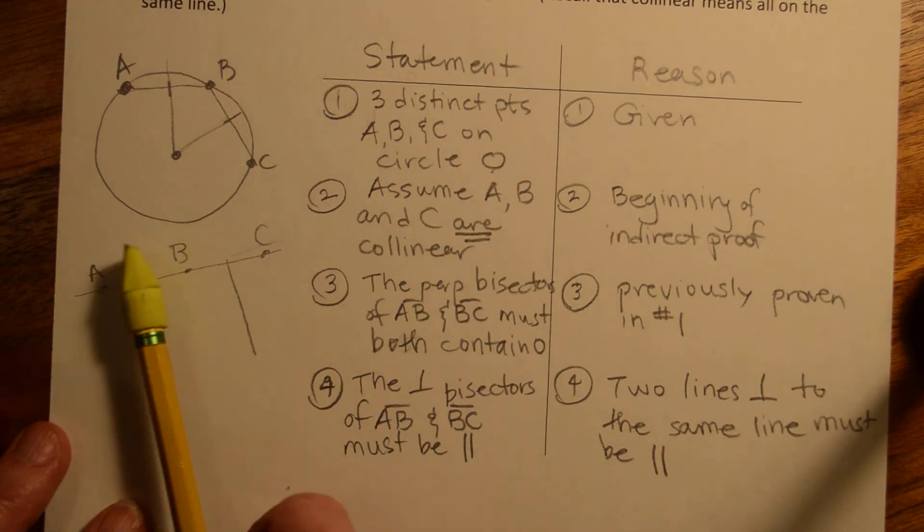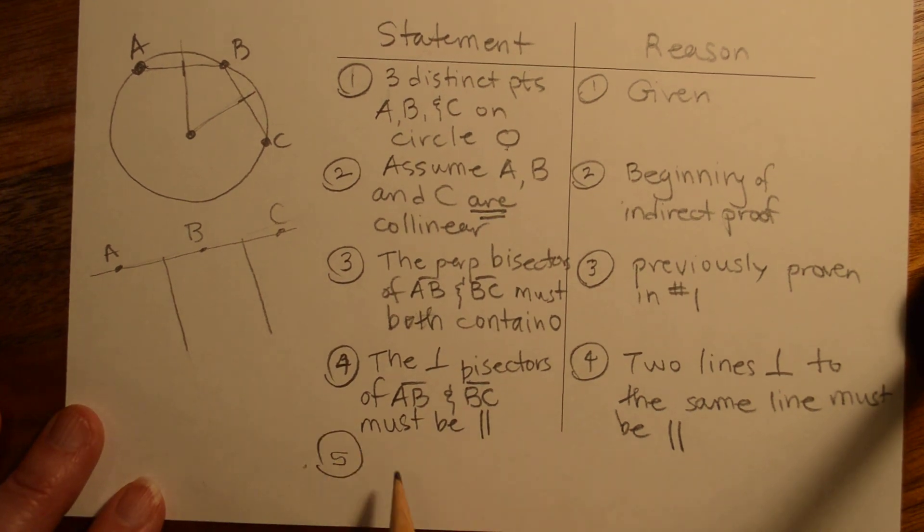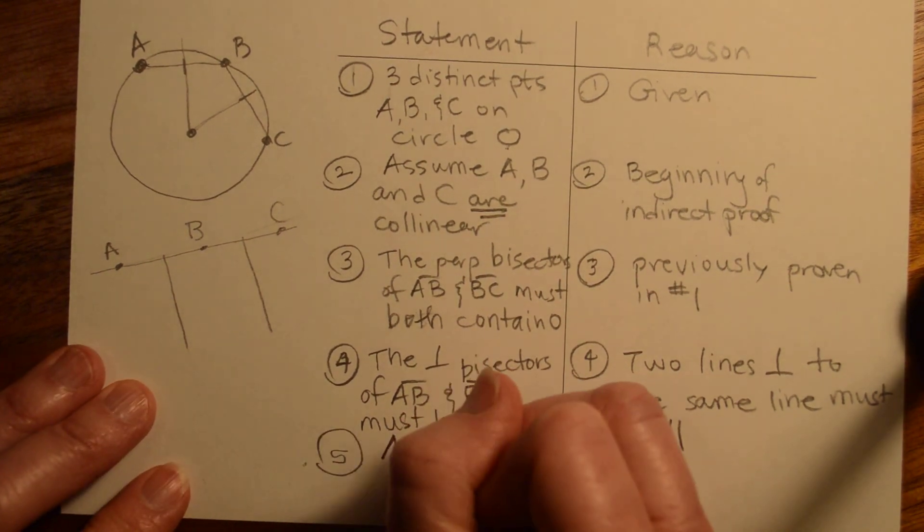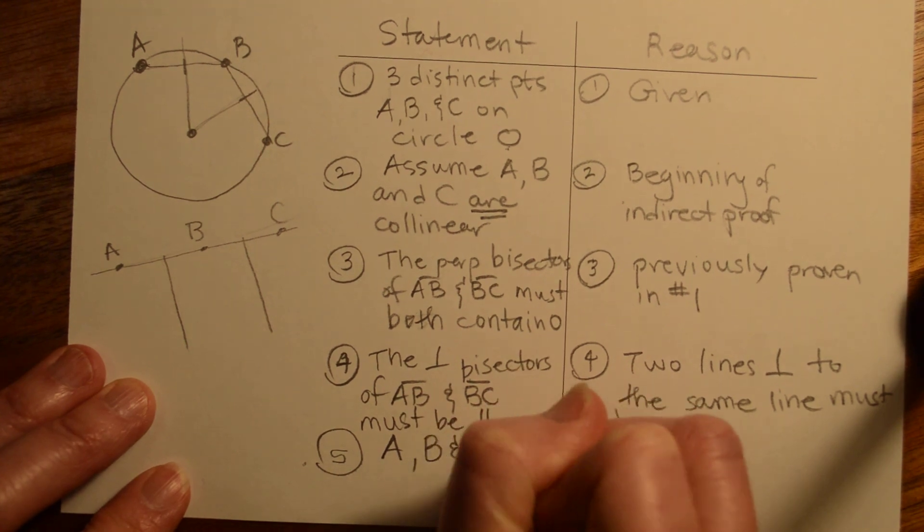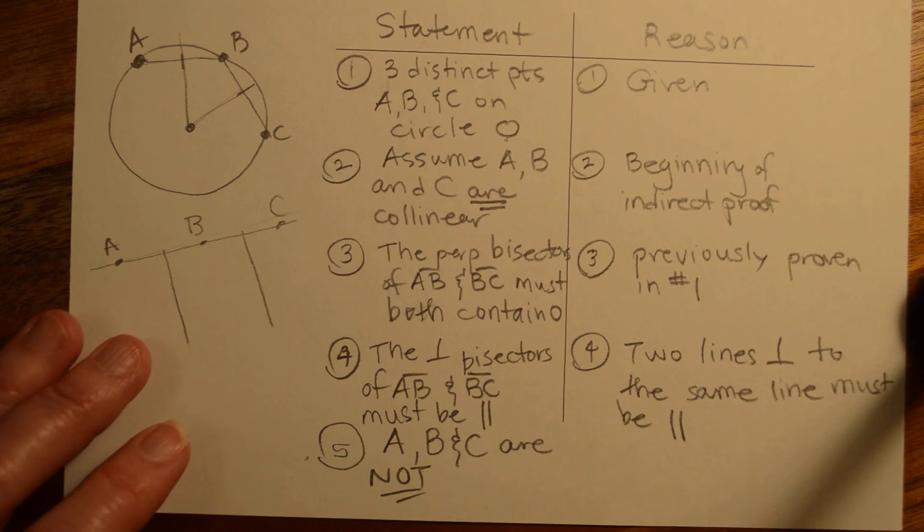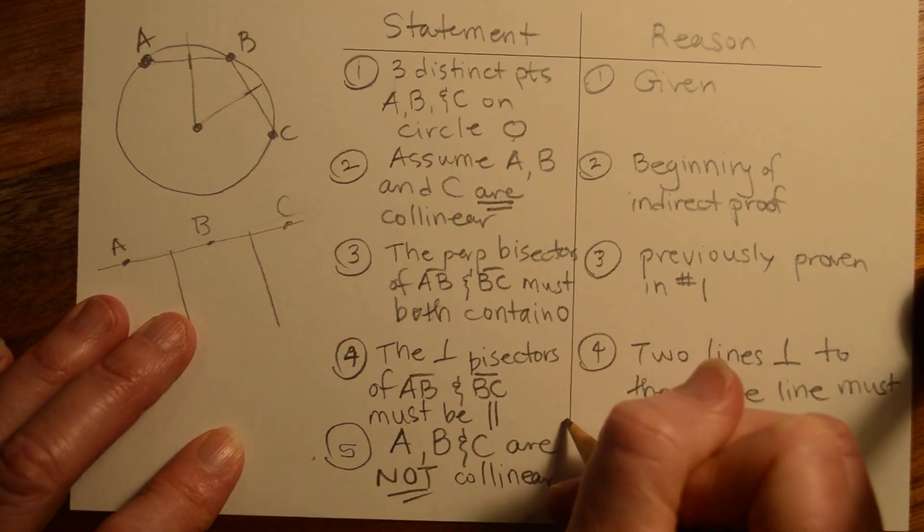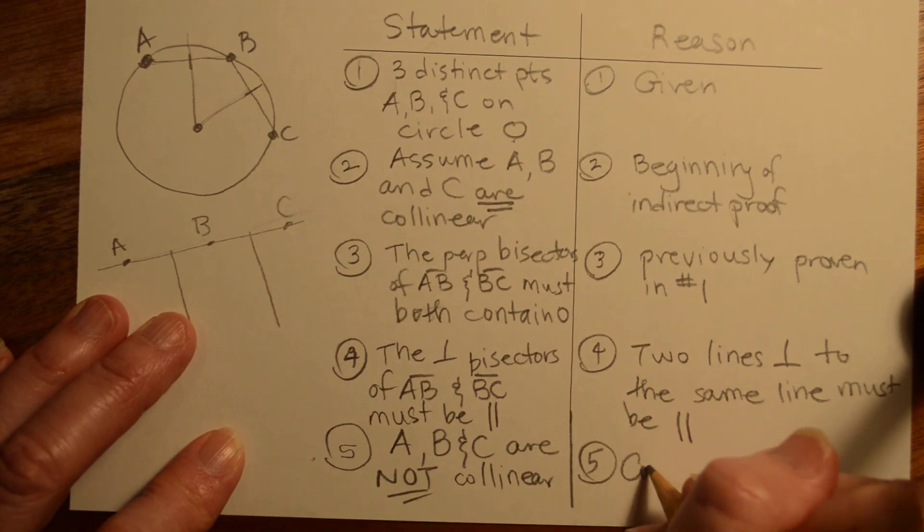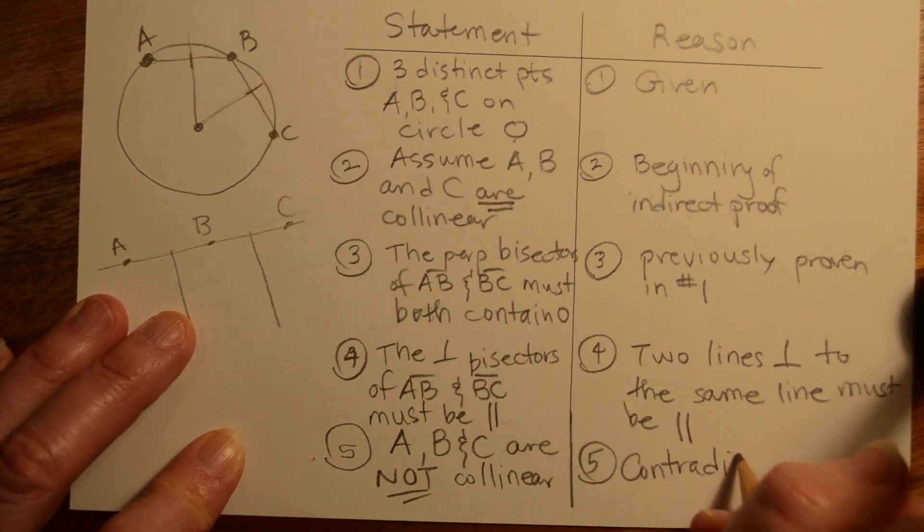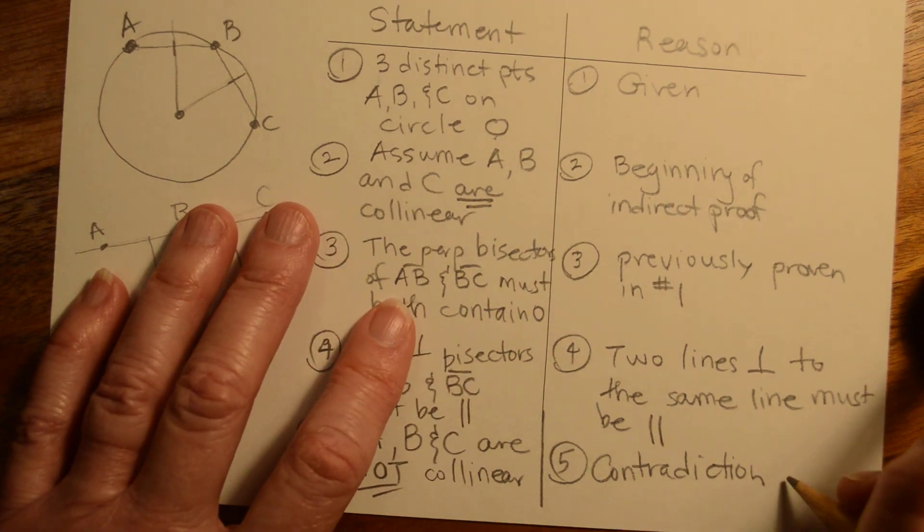That is a contradiction. They can't be parallel and intersect at O, and so we would have right here that A, B, and C cannot be collinear. Or not collinear. And the reason is contradiction in steps three and four.